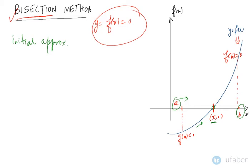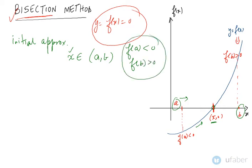Our initial approximation is that the root lies between A and B. This is because f(A) is negative and f(B) is positive — this sign change is the required check to confirm a root exists in that interval.